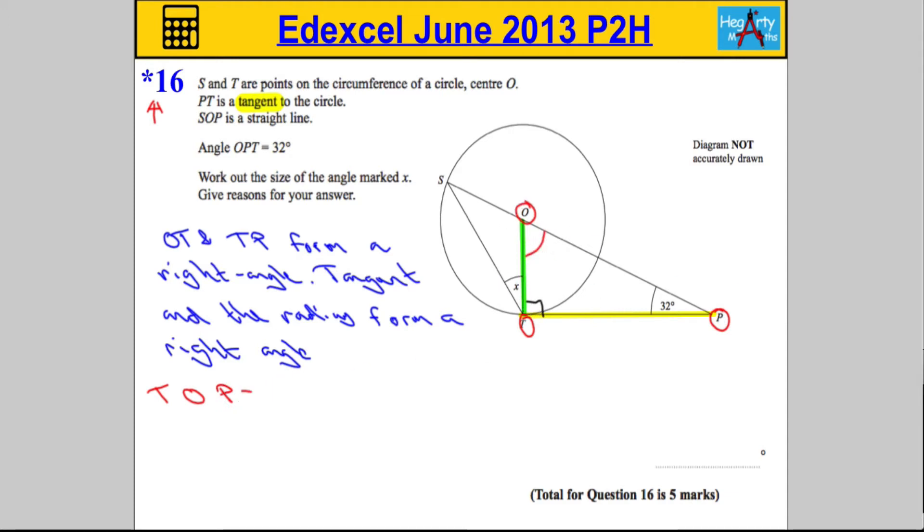...is going to be found by doing 180 degrees subtract the sum of the other two angles. So we've got the 90 degrees and the 32 degrees, and when we work that out we're going to get an answer of 58 degrees. So let's mark that on our diagram. This angle here is 58 degrees.